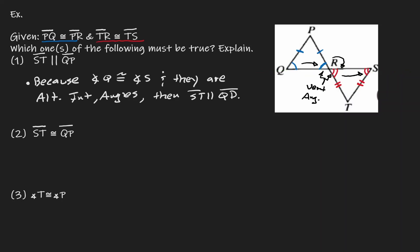Now let's take a look at the second statement: Is it true that SRT is congruent to QP? SRT we have here at the bottom and QP we have here on top. Notice that the angles which are opposite to those sides are congruent to each other, and that's enough information to claim that SRT is congruent to QP. So this is true because angles PRQ are congruent to angle SRT.